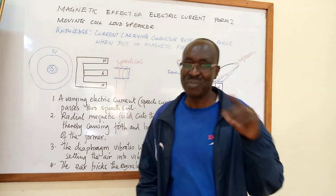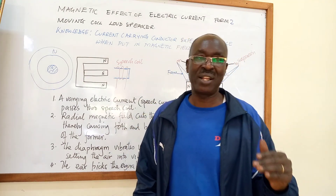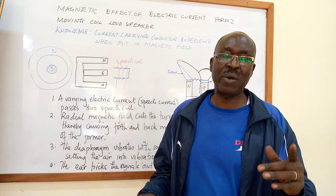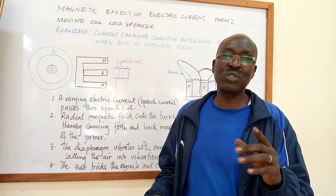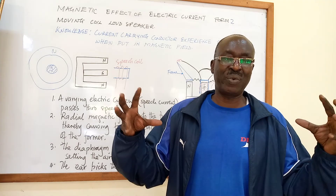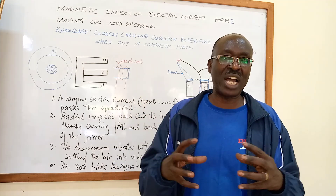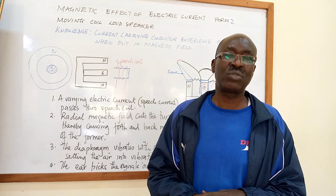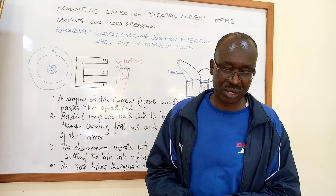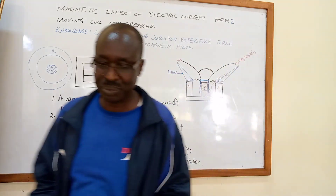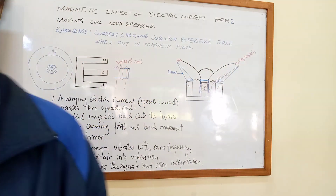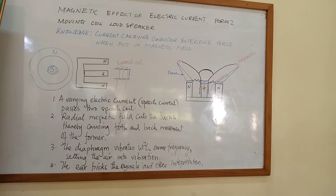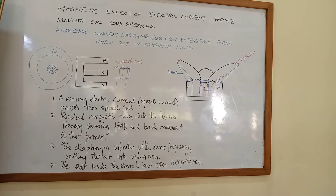This is a simple way to explain how a moving coil loudspeaker works. Remember the name: moving coil — there is a coil that moves, wound on the former. Listen to it two or three times and you will be fine. We are going to rush on topics, so prepare well. See you.